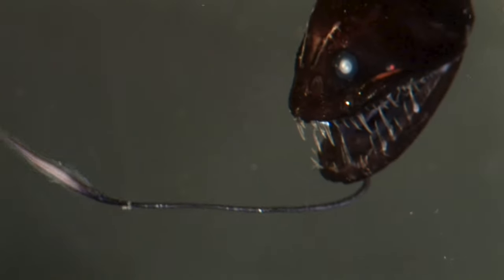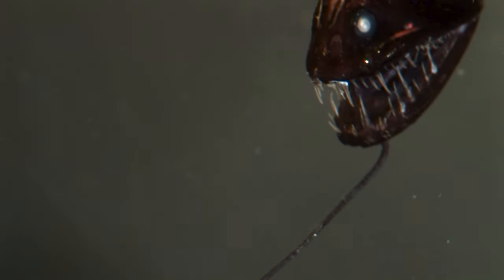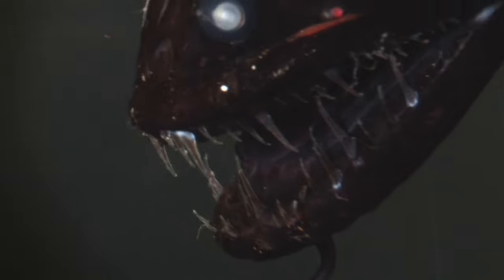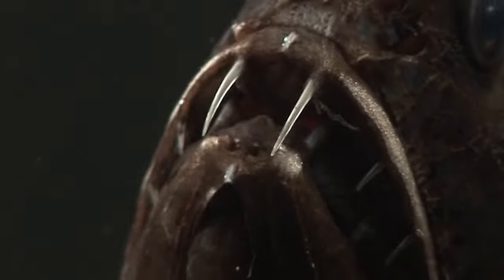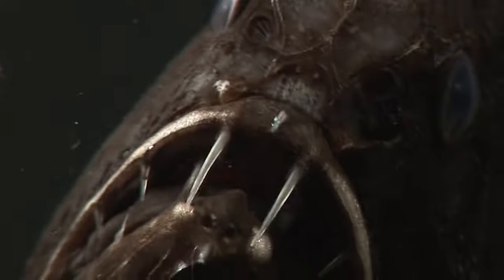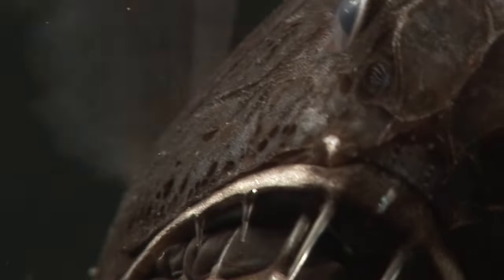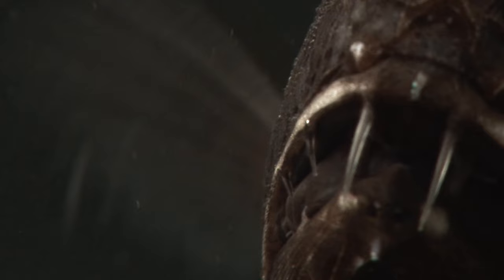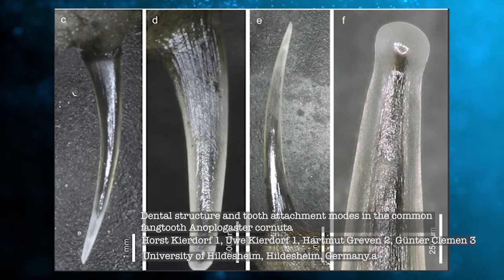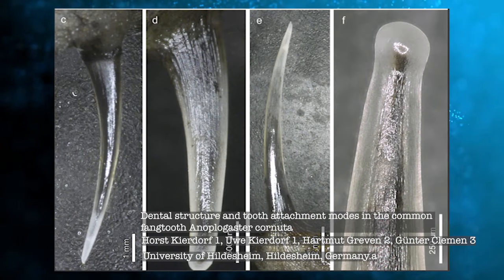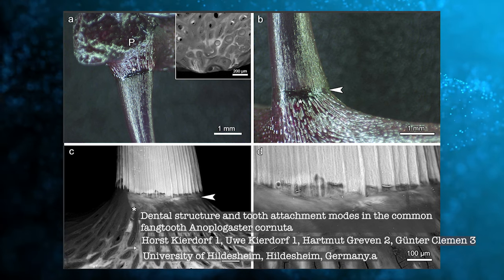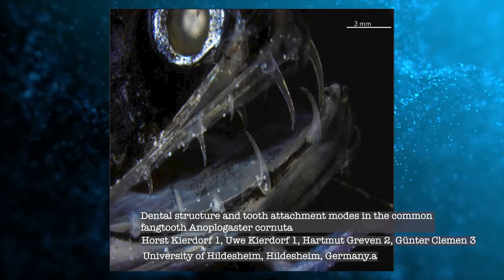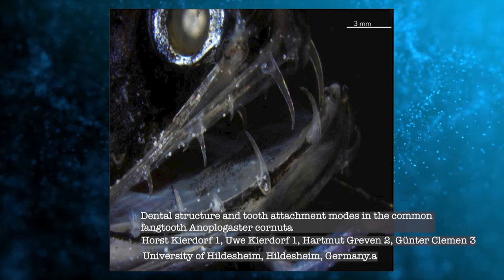The other thing you notice about the teeth, in both the dragonfish and the fangtooth, is that they're both transparent, looking very similar in both species. In 2019, scientists at the University of San Diego discovered that they're made up of very, very small crystals, nanocrystals, that scatter light and make them transparent. So they can't reflect any of that bioluminescent light that flashes around in the dark down there.